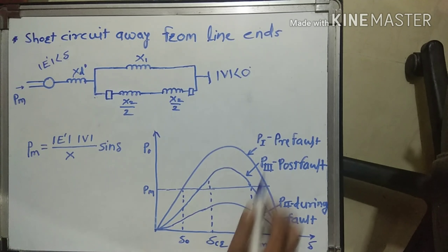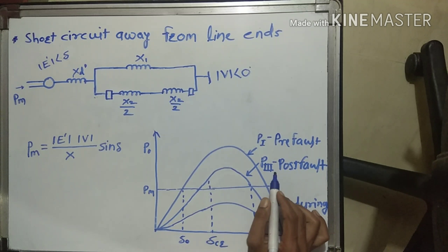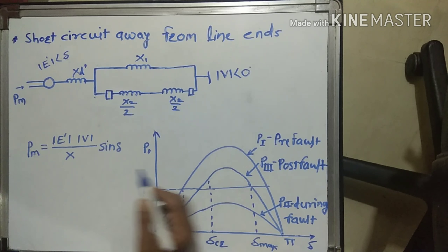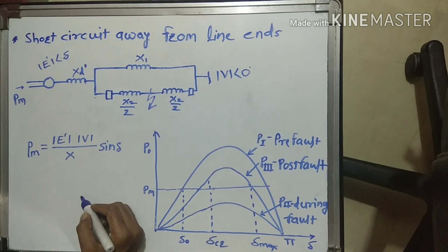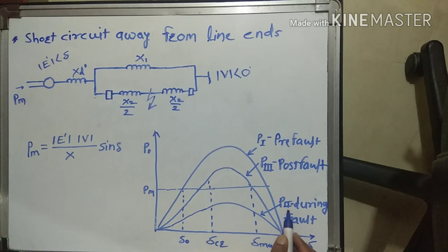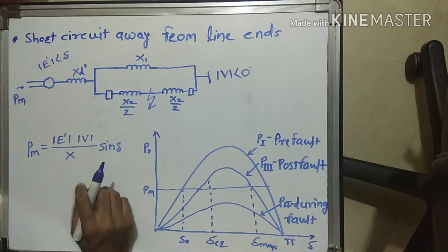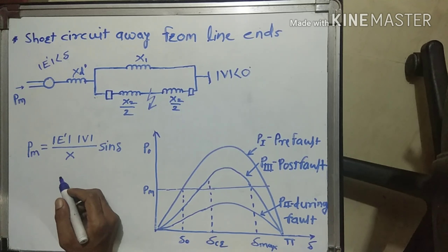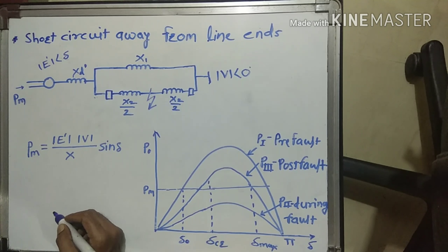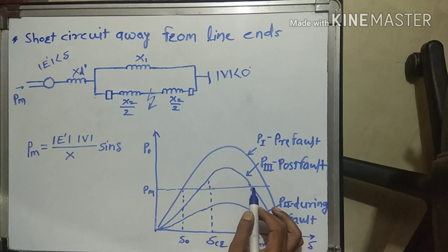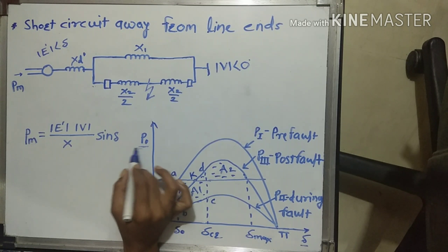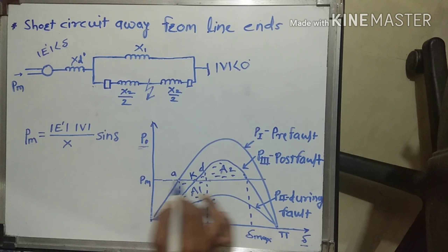For the system, we draw this diagram. P1 is the pre-fault power, P2 is the during-fault power, and P3 is the post-fault power. Before any fault occurs in the system, the reactance is less, so we get P1 more. If a fault occurs, the reactance of the system increases, but still some power flows through line 1, so we get some power — this is P2, the during-fault power. After removing the fault using a simultaneous circuit breaker, we remove line 2 from the system. Now line 2 is isolated, and the reactance is X3 dash plus X1, which is more than the healthy system, so we get P3 less than P1. Output power is on the Y-axis and del on the X-axis, and this is the condition where mechanical power equals output power.